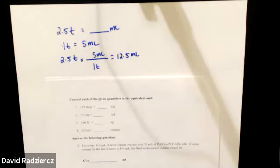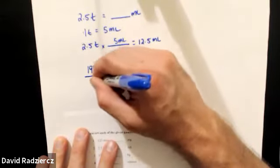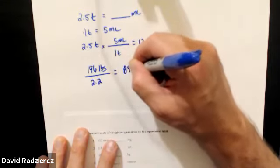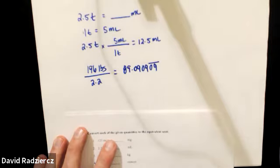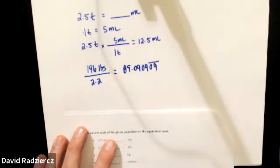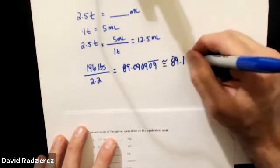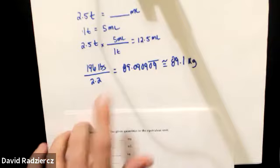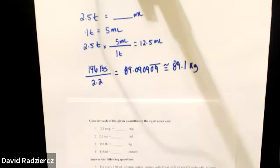The 196 pounds would be an answer you would round. 196 divided by 2.2 gives 89.0909 repeating, so round to the nearest tenth — that's 89.1 kilograms. Don't forget your units. The only time you would not do this rounding with weight is in pediatric dosages, and you have a specific class for those drug calculations.